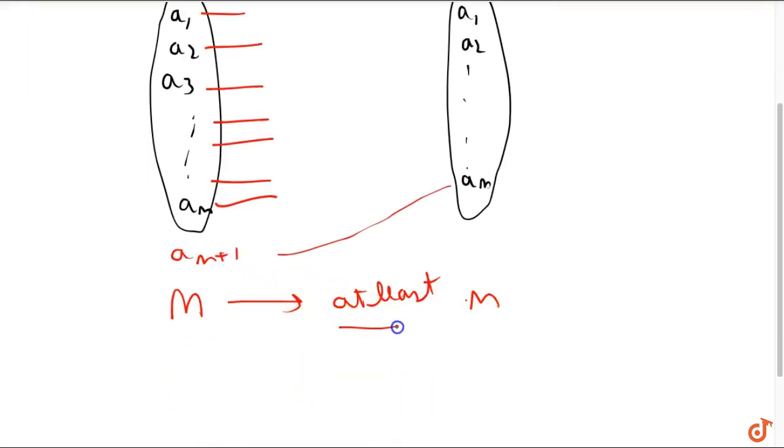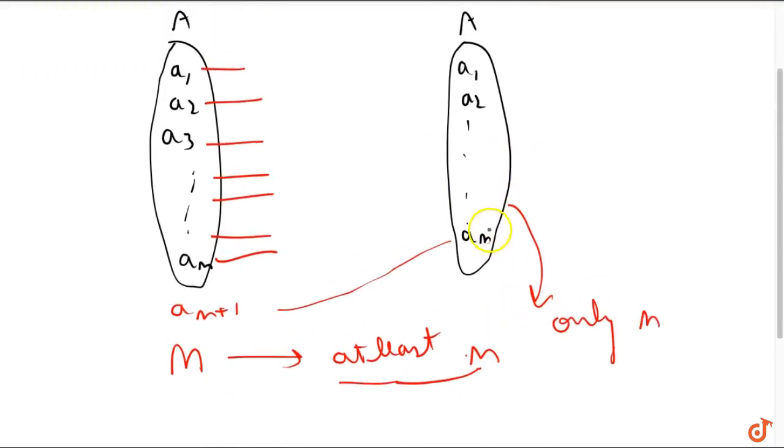But at least n elements will be mapped and because there are only n elements in the co-domain, which means that all the elements must be mapped to certain elements in the domain. So basically all elements in the domain are mapped to all elements in the co-domain.